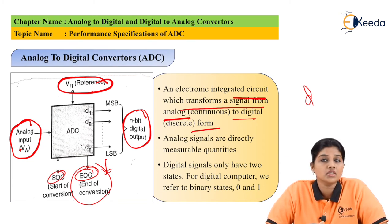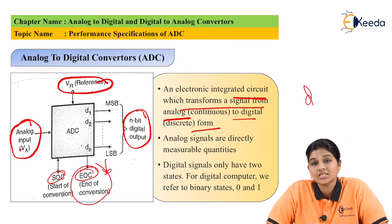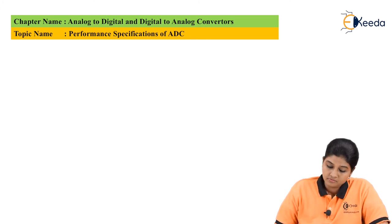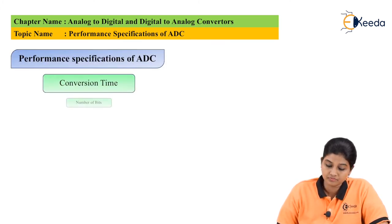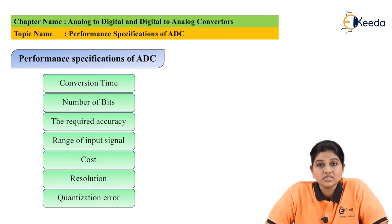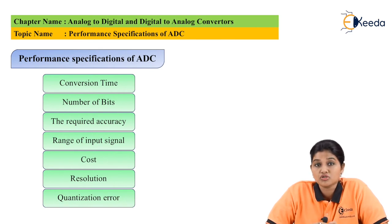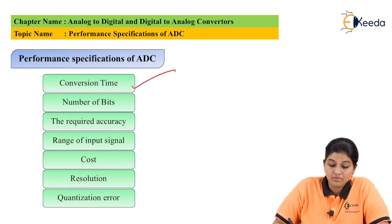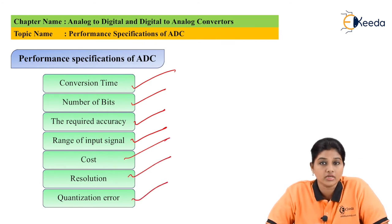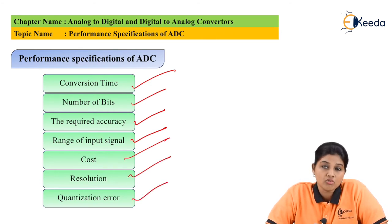Now let's look at the various performance parameters or selection criteria that we need to consider while using an ADC for a particular application. The performance of an ADC is judged on the basis of these parameters. The parameters are: conversion time, number of bits, required accuracy, range of input signal, cost, resolution, and quantization error. Let's see these quantities one by one.